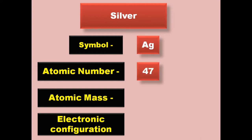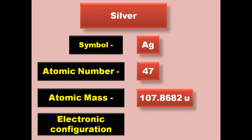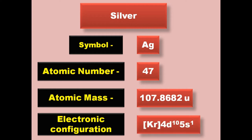Silver has symbol Ag, atomic number 47, atomic mass 107.8682, electronic configuration [Kr] 4d10 5s1. Silver is a transition metal and exists in solid form at room temperature.